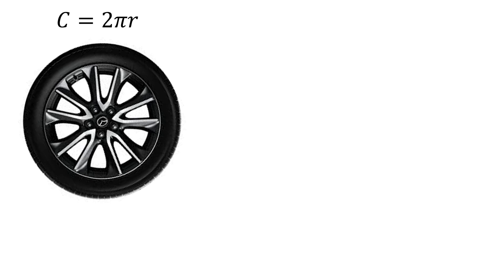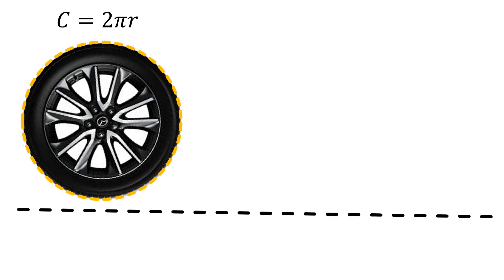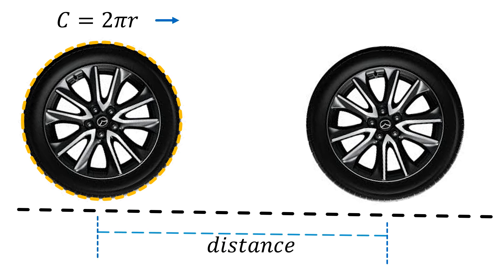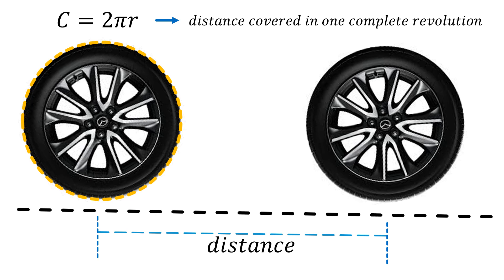We have here a wheel of a car. Since it is circular, it has a circumference of 2πr. There is a representation. Now if it moves, then there is a change of position, so there is a particular distance. The distance covered in one complete revolution is equal to the circumference of the circle. So if you have n number of revolutions, then n multiplied by 2πr is the distance covered by that particular wheel.